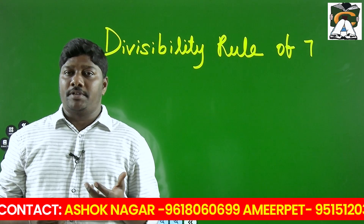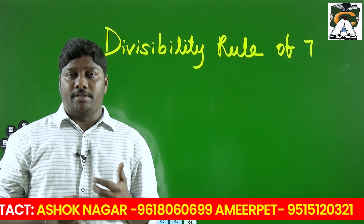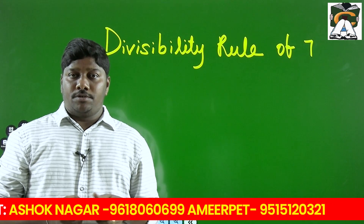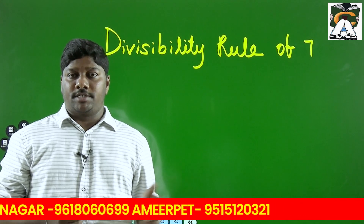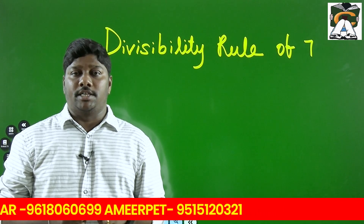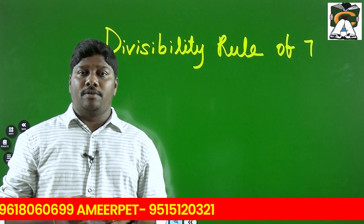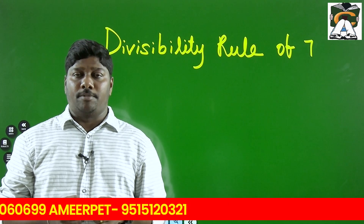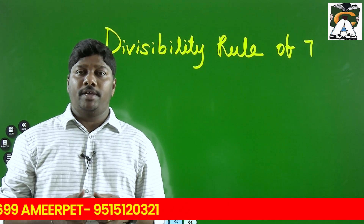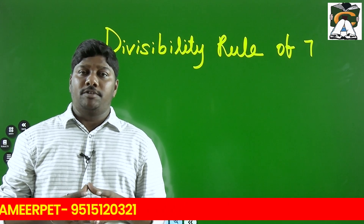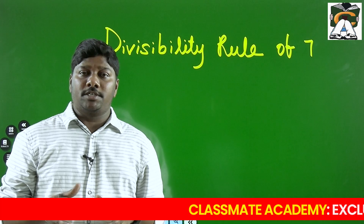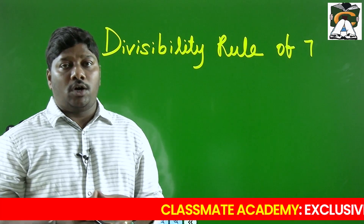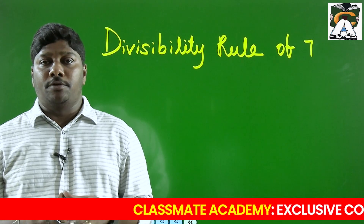The divisibility rule of 7 is a little different from others. For example, the divisibility rule of 8 says check the last three digits, and the rule of 9 says find the sum of digits. So how do we crack the divisibility rule of 7? We'll see how to do it from the basics.